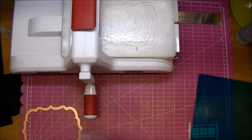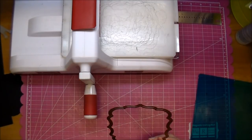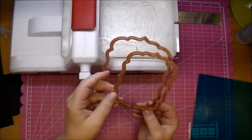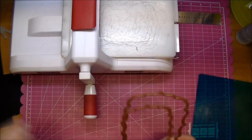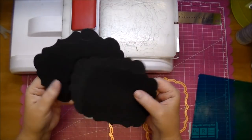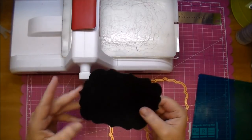So let me show you here what I am talking about. So again, I am using the Labels 39 die. And I have chosen the largest and the second largest from the set. From the largest, I cut out several from black cardstock already. I cut out four and I am using those as the solid background.